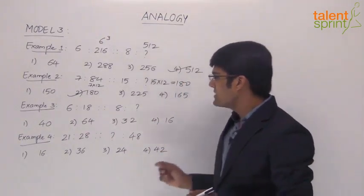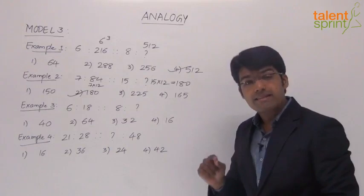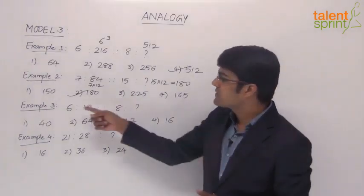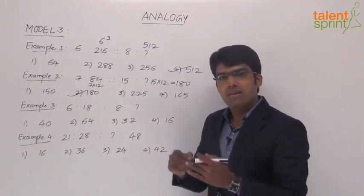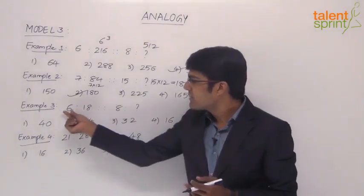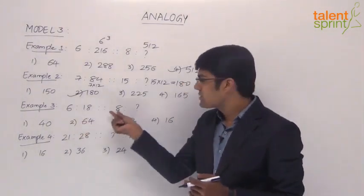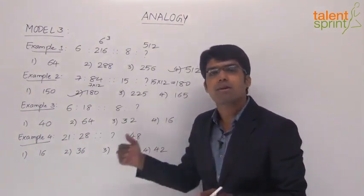But when you look at the options we see that there is no option which is 24, which means there is some other logic which is working out here and we are yet to get that logic. So we now need to work further on this question till we get the right logic. The first logic that we have applied is 6 and 6 into 3, but 24 is not there in the options. So let's work on something else.